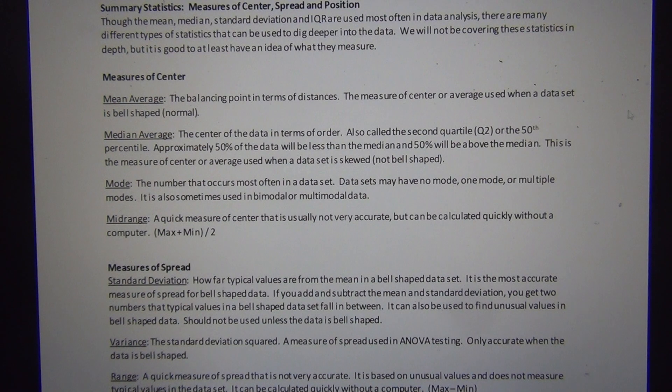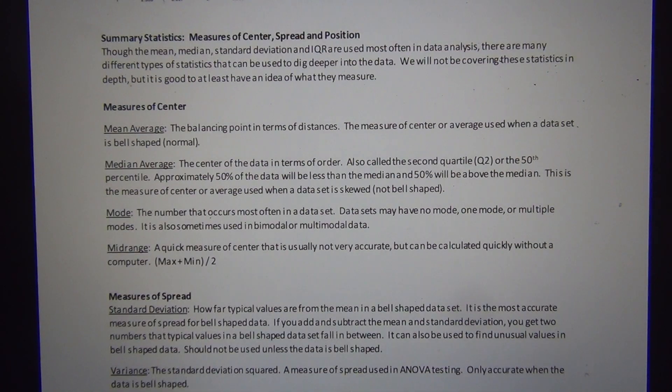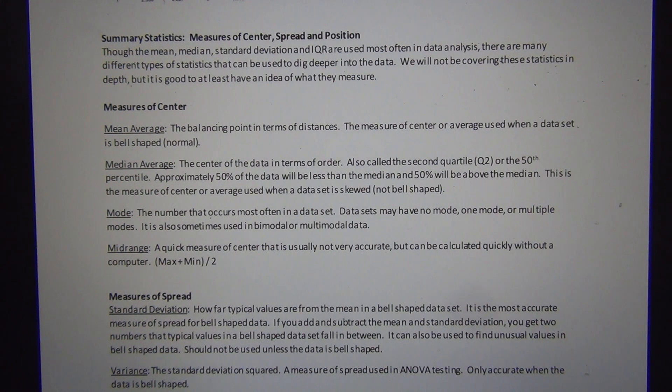The main thing is they're broken up into centers. We said a center is a type of average. We want averages to be close to the center of our histogram and our dot plot. Center goes with averages.